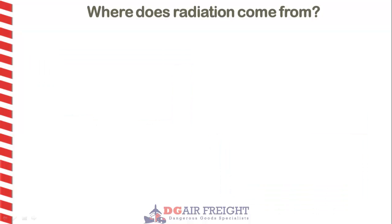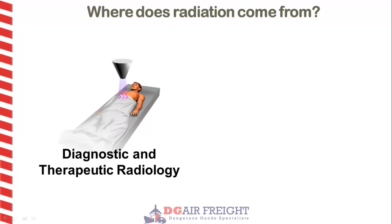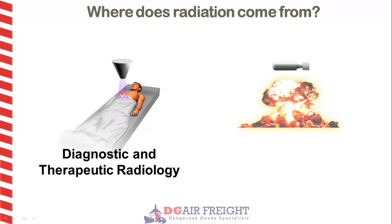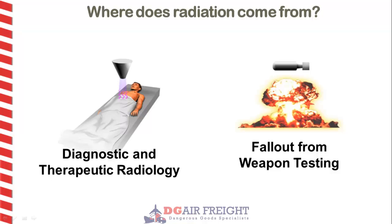In addition to natural background radiation, there are many sources of man-made radiation that may contribute daily to radiation exposure for humans. These include diagnostic and therapeutic radiology — the use of radiation, for example x-rays, to determine a patient's condition and also to treat a patient, like cancer radiotherapy. Another source is fallout from weapons testing: radioactive materials created during a nuclear test were injected into the highest regions of the atmosphere, carried around the Earth several times, and gradually returned to the Earth over a period of a few years, giving doses to the population.